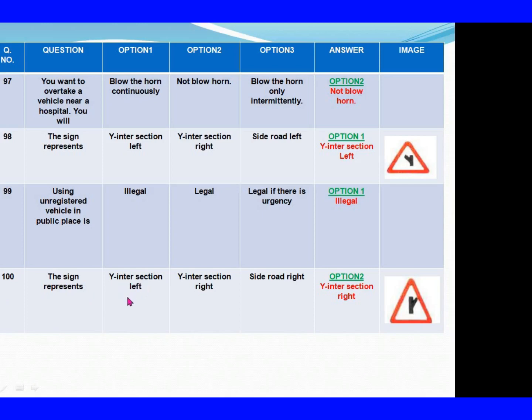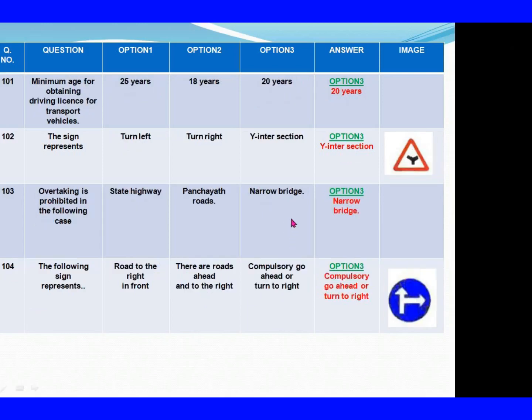Question 98 answer: The sign represents. Option 1: Y intersection left. Option 2: Y intersection right. Option 3: Side road right. The right answer is Option 2: Y intersection right. Question 101: Minimum age for obtaining a driving license for transport vehicles. Option 1: 25 years. Option 2: 18 years. Option 3: 20 years. The right answer is Option 3: 20 years.